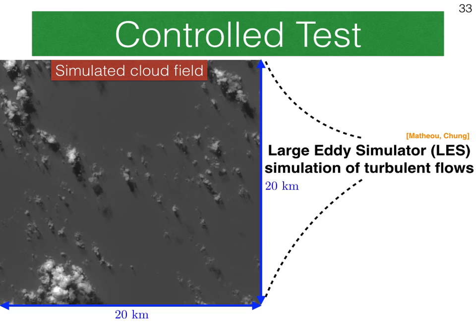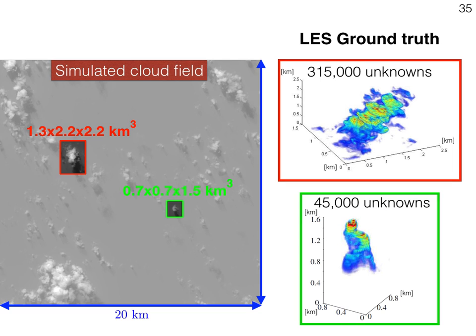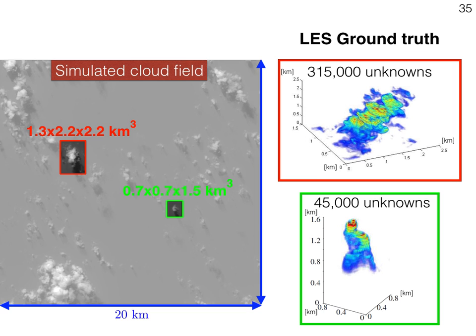To test this approach in a realistic setting, we used a large eddy simulated cloud field, which is a physically realistic cloud field. We focus on two test cases — the cloud in green and the cloud in red — and for both we render 9 views as if seen by an airborne instrument. On the right you can see the LES ground truth distribution, and notice that we have up to 300,000 grid points, which are our unknowns to recover. This is the recovery using our approach — here is the ground truth, and here is the recovery.